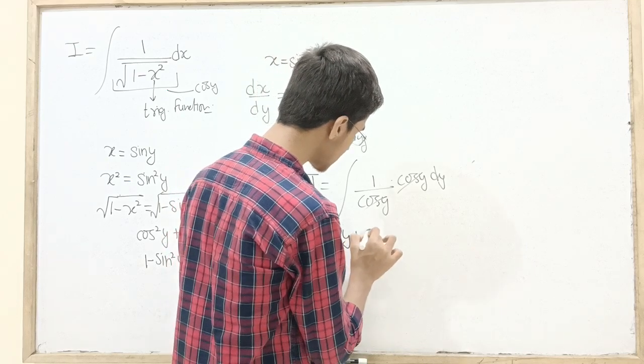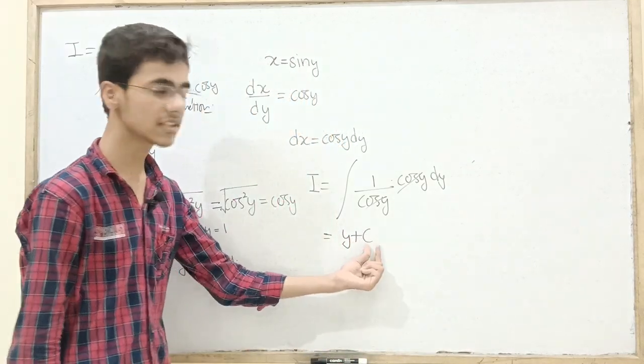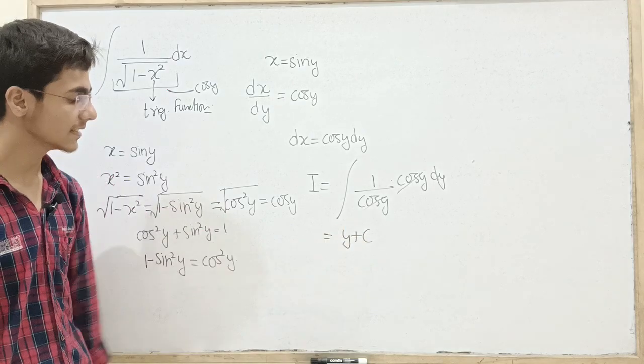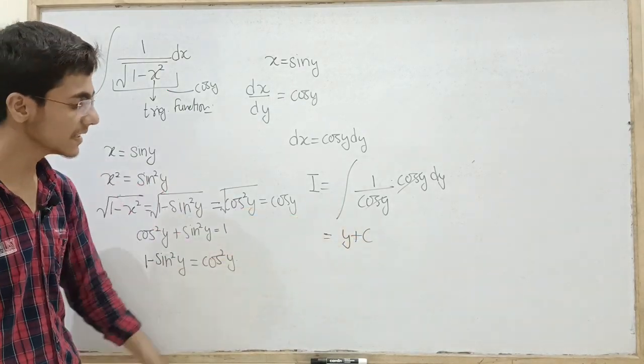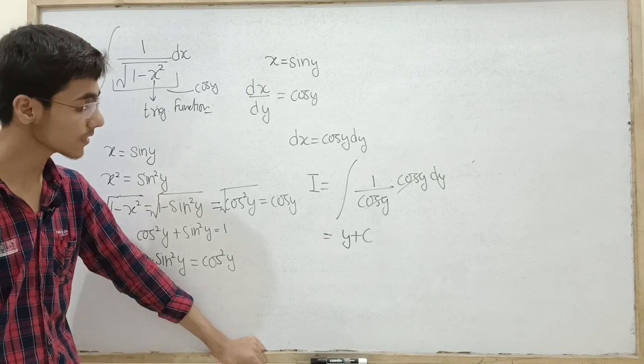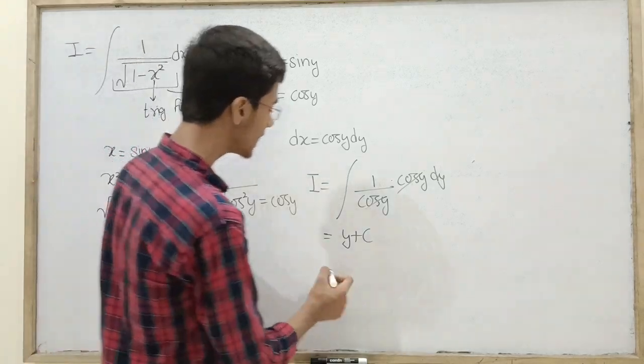Integral of dy is y plus c. We have to add a constant of integration. So you can see clearly how simple a function is, just a single variable added with constant of integration.